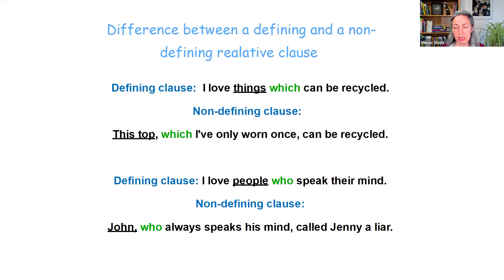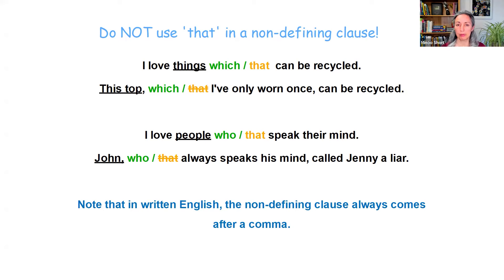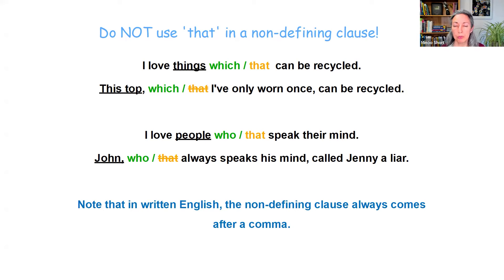So why am I mentioning this? Because it makes a difference to whether we can use 'that' or not. We cannot use 'that' for a non-defining clause. For example, the defining one: 'I love things which or that can be recycled' — no problem. But with 'this top, which I've only worn once,' we cannot use 'that.' Similarly, 'I love people who or that speak their mind' is fine, but in the sentence with John — 'John, who always speaks his mind, called Jenny a liar' — we cannot use 'that'; only 'who' works here. Note that in written English, the non-defining clause always comes after a comma, which tells us it's additional, non-essential information.